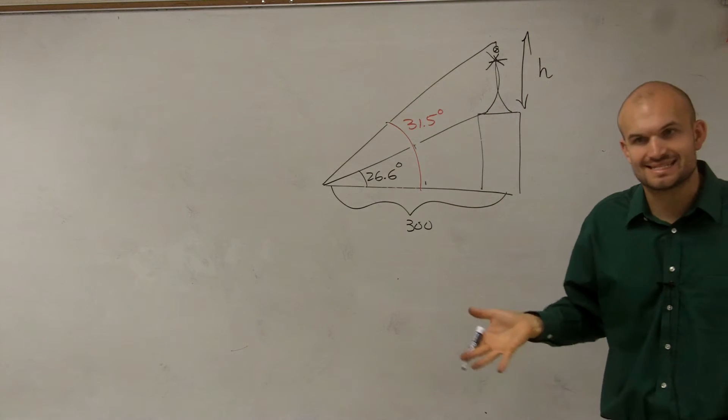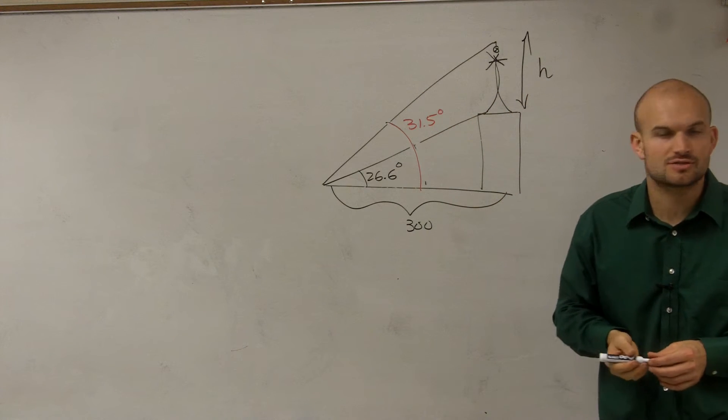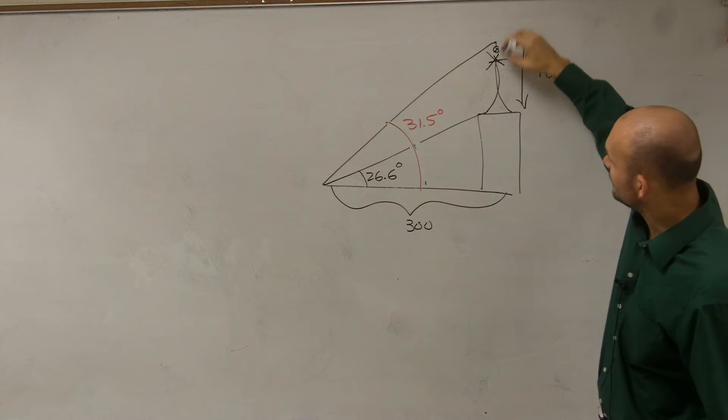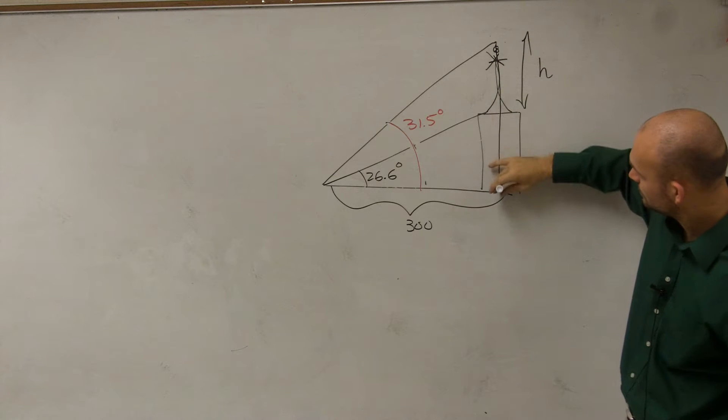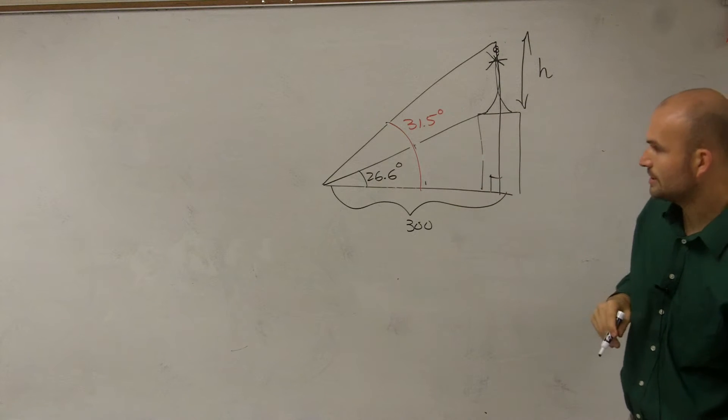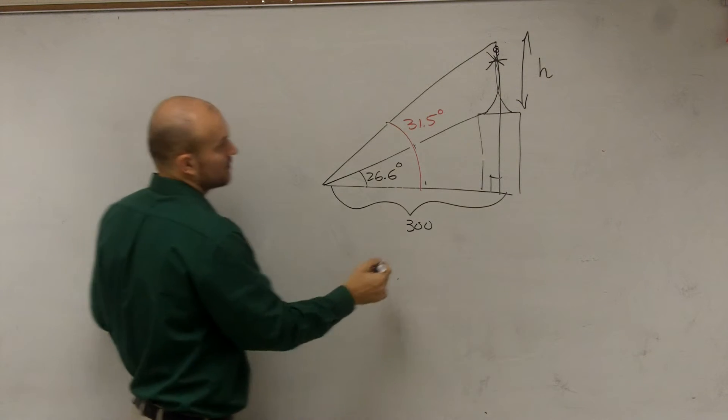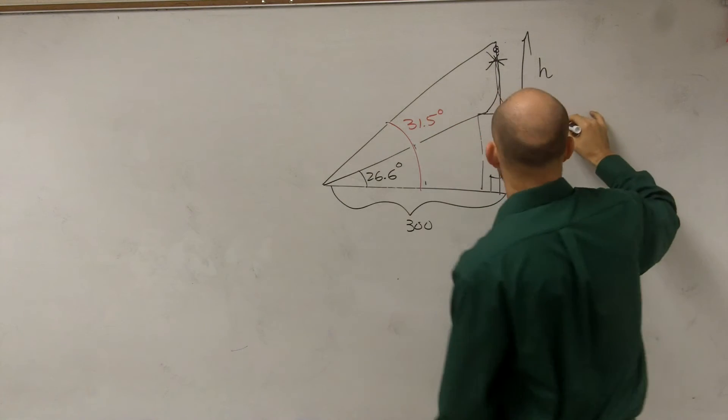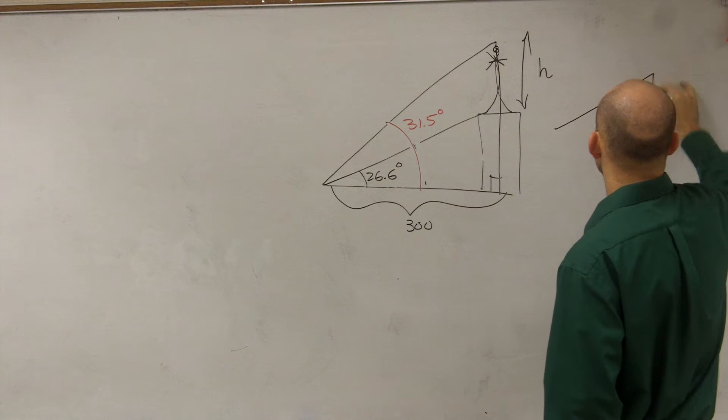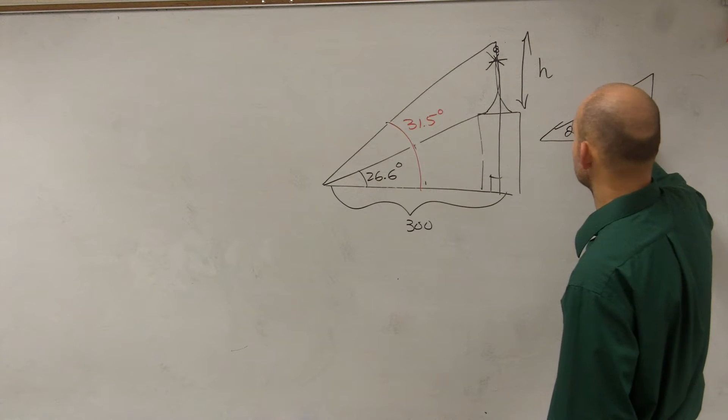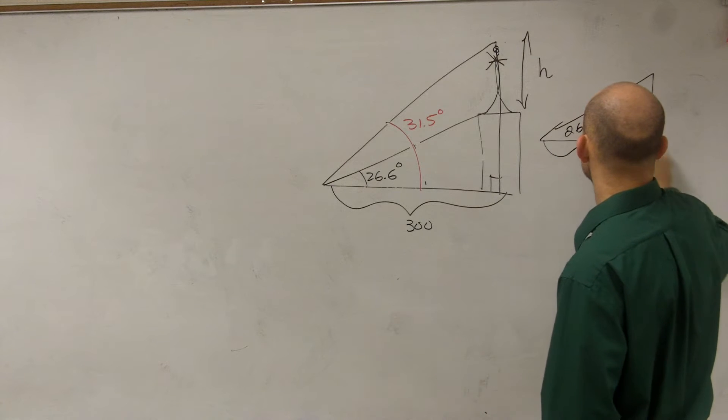So ladies and gentlemen, if you want to find the distance between two things, what you're going to want to do is probably create two different triangles. Now I know I can create a right angle by drawing a perpendicular line right here. Therefore, I have now in essence created two different triangles. I created one triangle that's going to look like this, where this one is 26.6 degrees and this is 300.